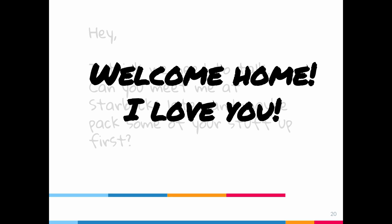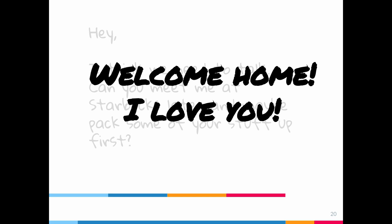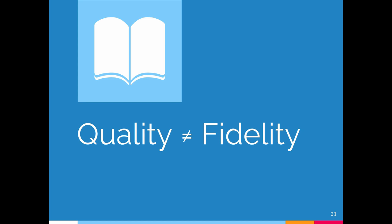Now, that brings me to one of the most important points. When we discuss adaptations, the least useful thing we can possibly do is judge an adaptation based on its fidelity to a source text. The goal is to evaluate them as separate works, even while we recognize their connection. We want to figure out what factors influenced each work and to take them into consideration. So what might some of those factors be? There are so many possibilities: time constraints, narration, simplicity, budget, audience, rating — the list goes on.